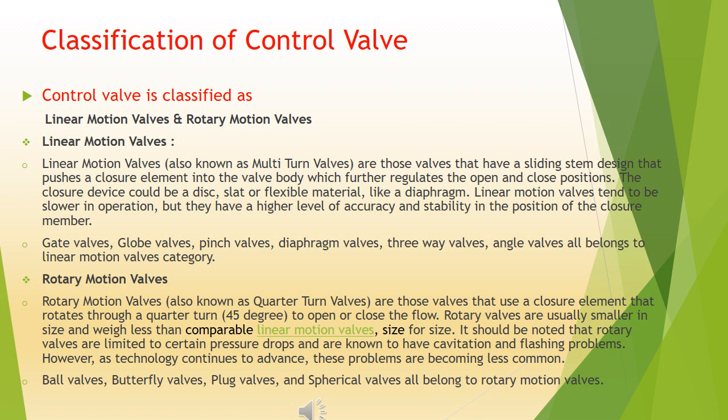The closure device could be a disk, slat, or flexible material like a diaphragm. Linear motion valves tend to be slower in operation, but they have a higher level of accuracy and stability in the position of the closure member. Gate valves, globe valves, pinch valves, diaphragm valves, three-way valves, and angle valves all belong to the linear motion valves category.